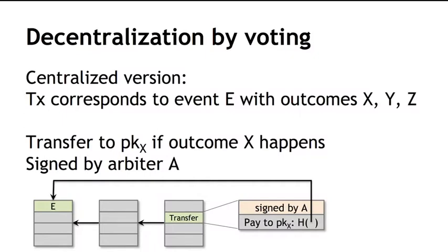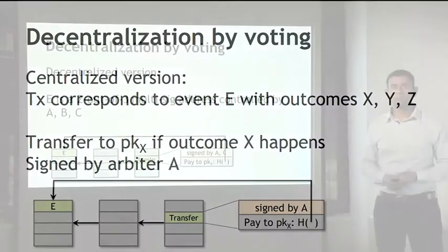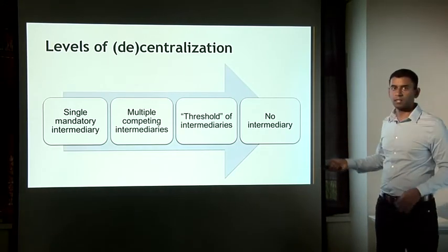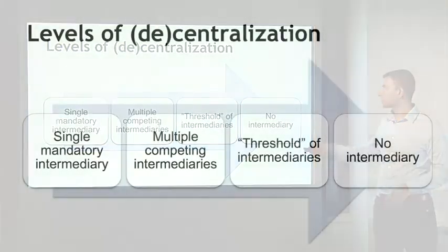To decentralize this data feed using a threshold of arbiters, let's say we want an outcome declared only if two of three designated arbiters agree. Using Bitcoin's multi-signature feature, we make the transaction output a two-of-three multi-signature address controlled by three arbiters A, B, and C — each holding one private key. Only if two of them agree can they create the transfer transaction. This decentralizes the notion of a data feed, and now we've seen an example of what it means to have a threshold of intermediaries, distinct from having multiple competing intermediaries.